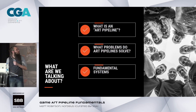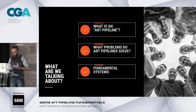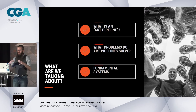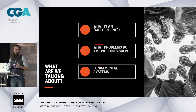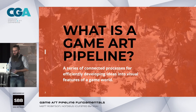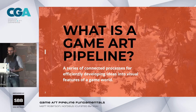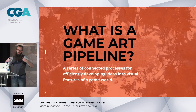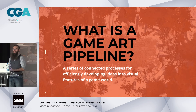So what we're going to talk about tonight is what an Art Pipeline is, what problems Art Pipelines solve, and a little bit about seven different systems that all kind of end up working together to help, no matter what type of art you're working with, make the process of working with it a little bit easier. An Art Pipeline is basically just a series of processes, both human and technological, that end up getting an idea into a game as a visual feature.